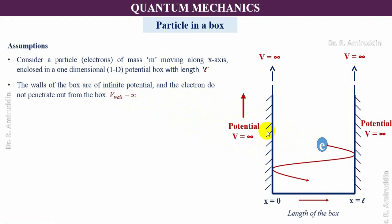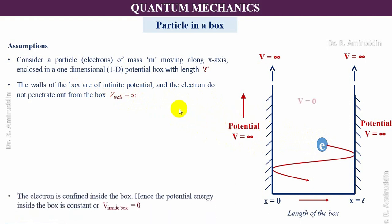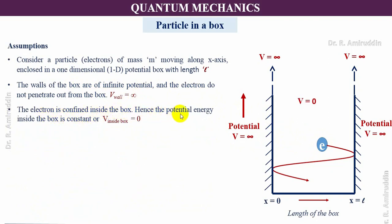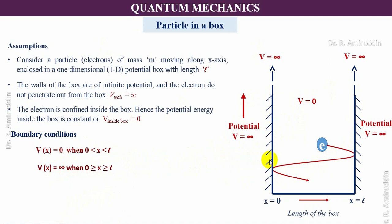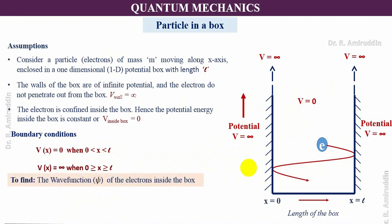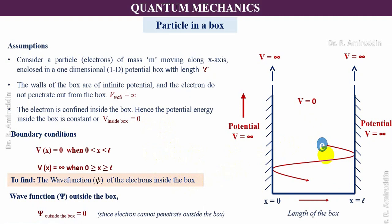Capital V at the wall or outside the wall is infinite. The electron is confined inside the box, hence the potential energy inside the box is constant, or capital V inside the box is zero. These are all the assumptions of this thought experiment. The boundary condition is: capital V equals zero when the electron is inside the box of length L, and capital V equals infinite when the electron is outside the box. The wave function outside the box will be zero because the electrons cannot penetrate outside the box.